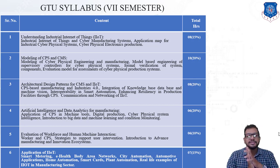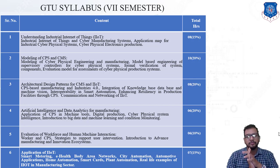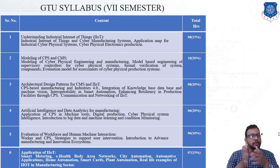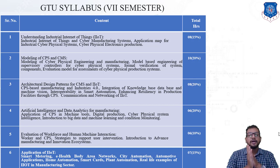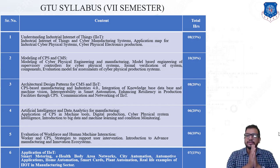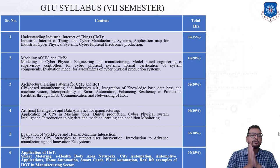Chapter six is 'Application of Industrial Internet of Things,' with a weightage of 15 percent. Topics include smart metering, electronic health body area networks, city automation, and real-life examples of IoT in the manufacturing sector. These six chapters cover the complete syllabus for this subject.